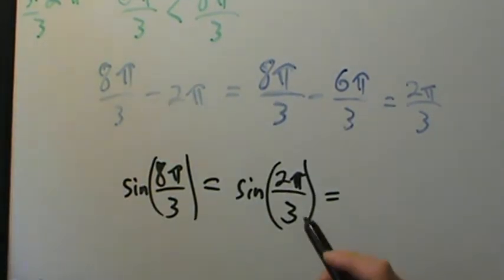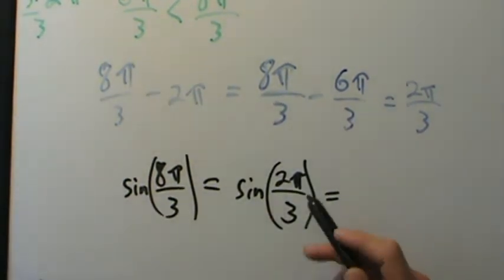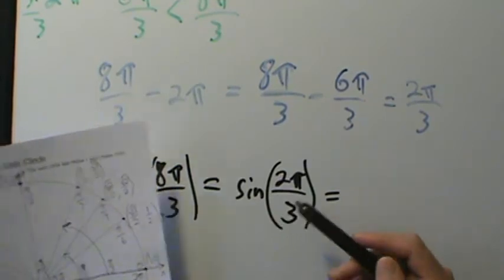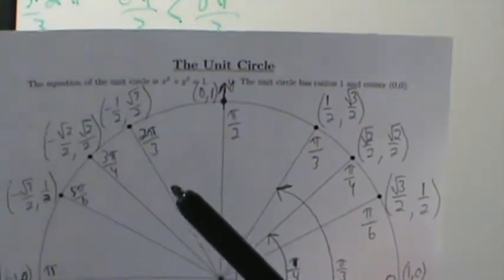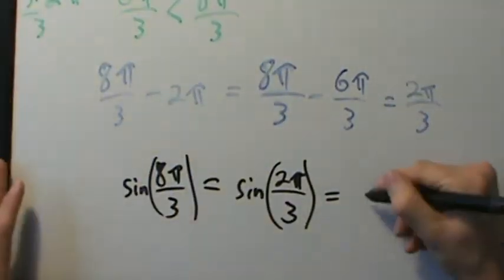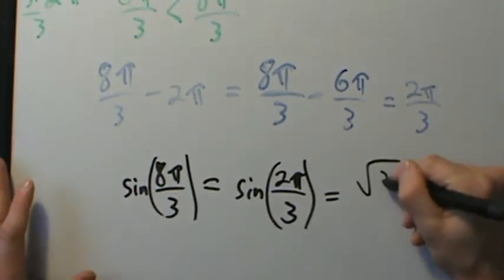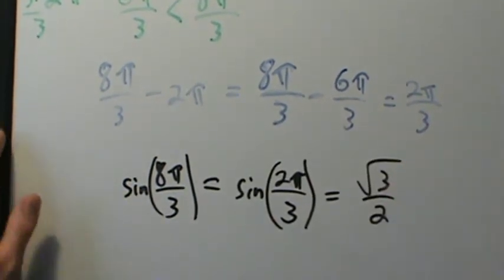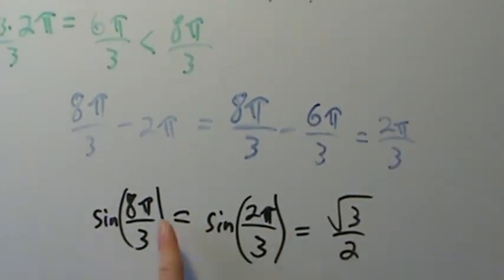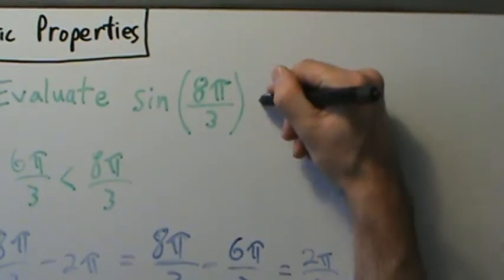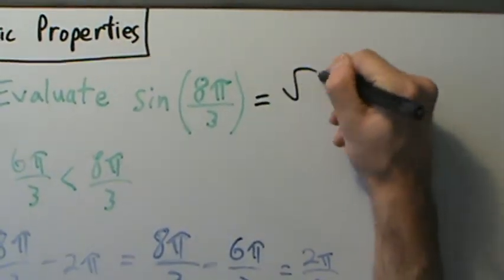Sine of 2π over 3 — what is that? That's the y-coordinate where this angle hits the unit circle, and that's √3 over 2. So this tells us that the sine of 8π over 3 equals √3 over 2, and that's our answer for example 1.